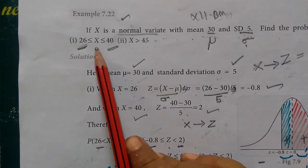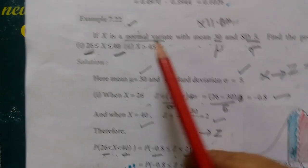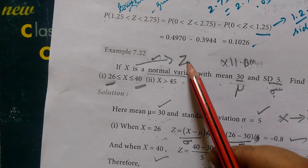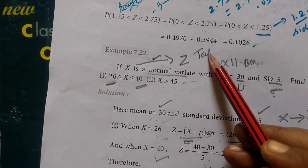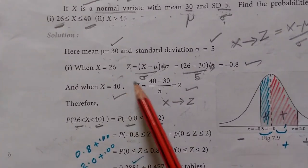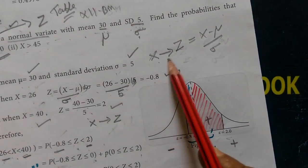Find the probability. For X variate we can use the Z table. When Z is given, we use the formula X to Z: (X minus μ) by σ.